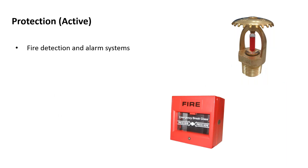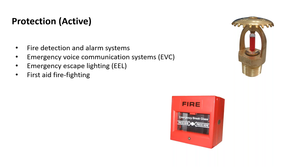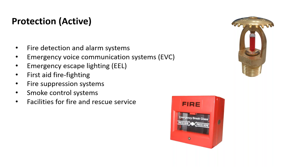PAS 79 also covers active protection measures: fire alarm systems and fire detection (from manual call points up to L1 category smoke detection everywhere), emergency voice communication systems (EVCs) if needed, emergency lighting, first aid firefighting equipment, fire suppression systems, smoke control systems, and facilities for the fire and rescue service.